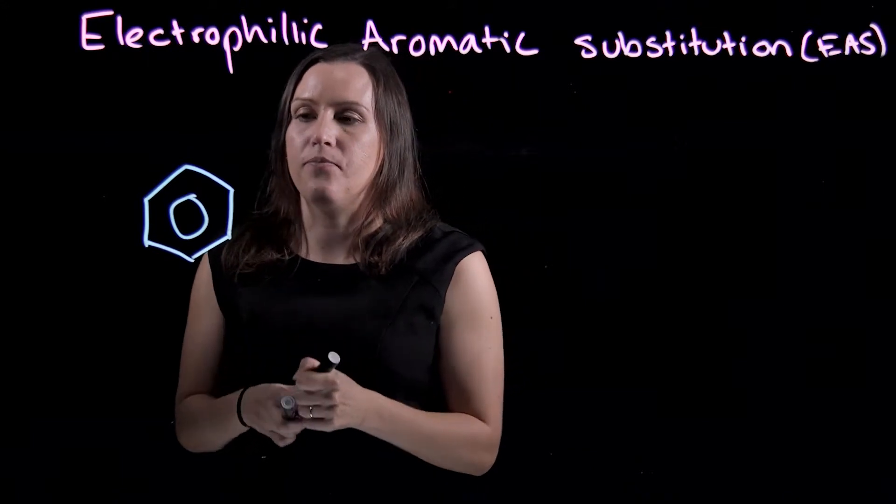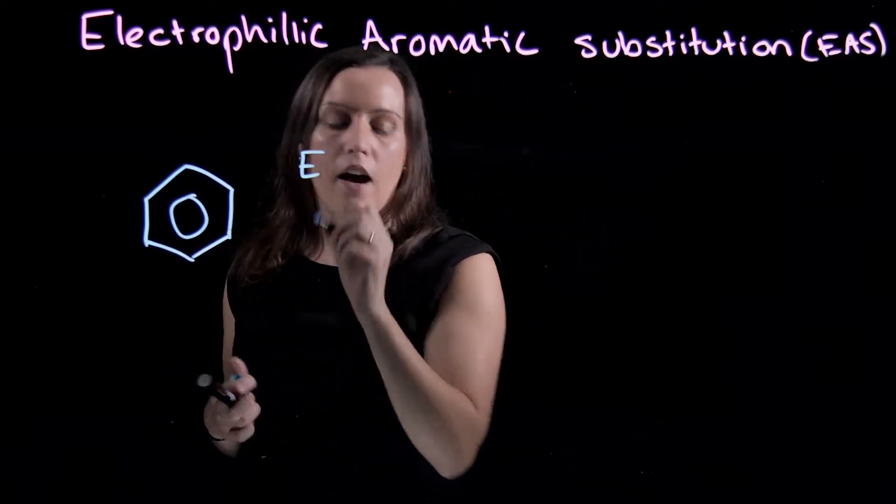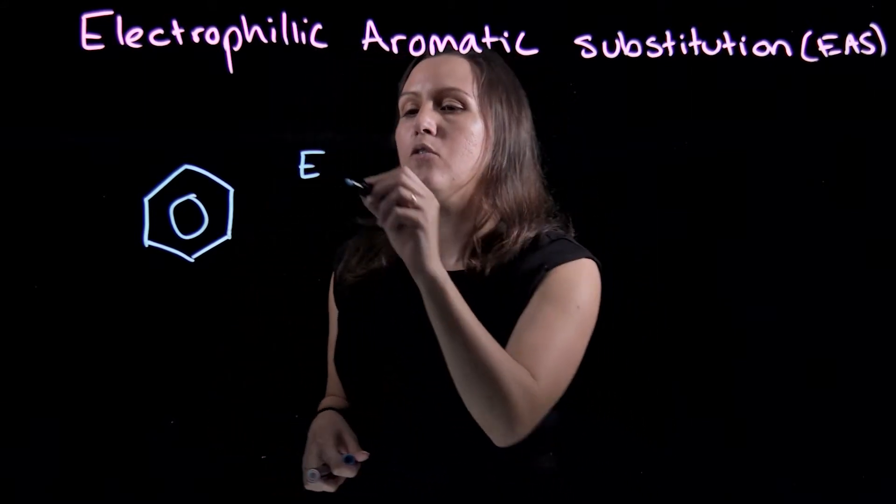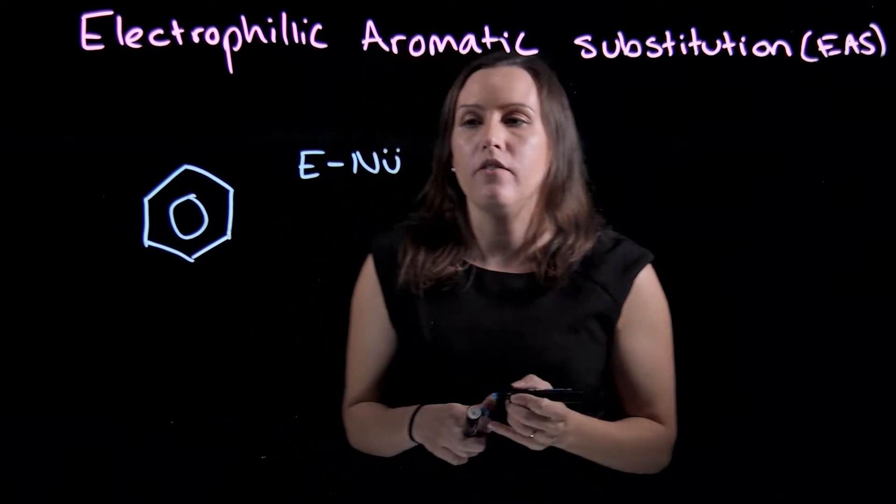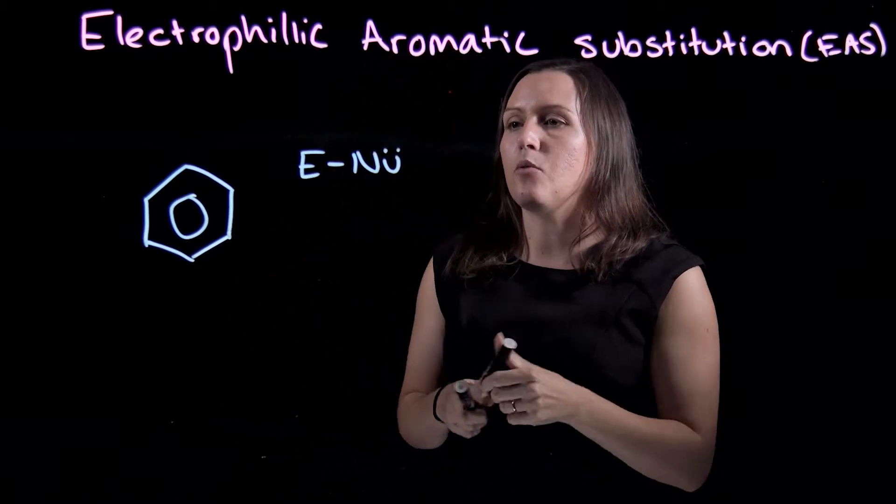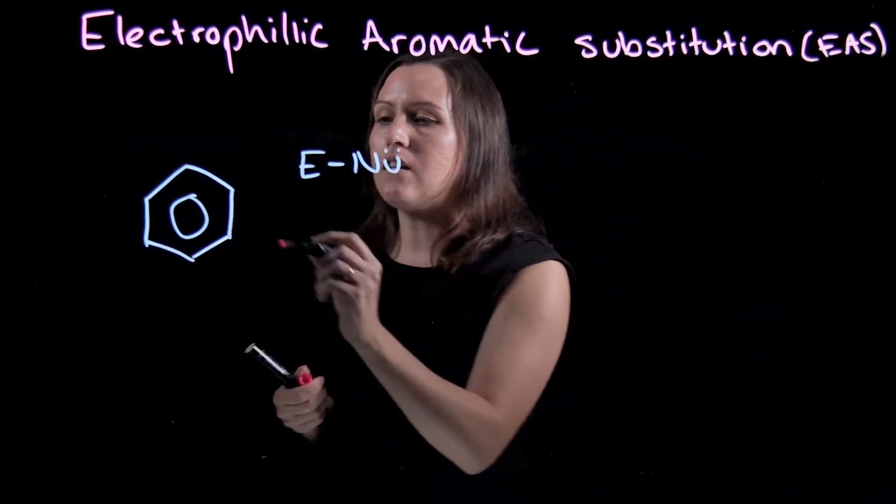Let's say that we have our electrophile, which we're going to have as E, and it's attached to a nucleophile. We've got our electrophile and our nucleophile. So the delocalized electrons will go onto the electrophile and make a bond.